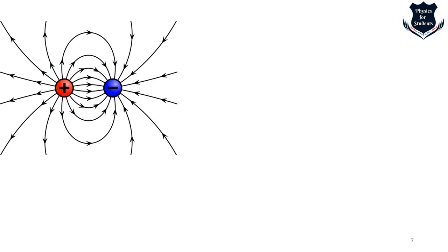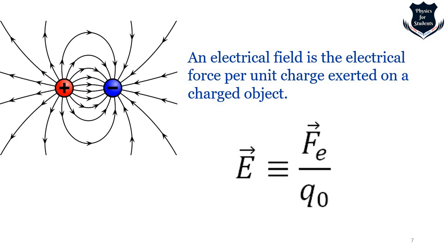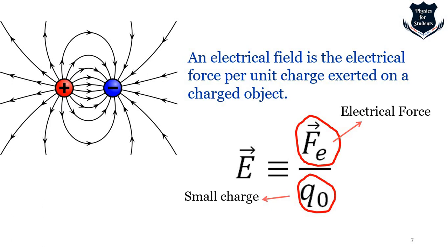A useful visualization shows a positive and negative charge. Most comprehensively, an electric field is the electrical force per unit charge exerted on a charged object. In the equation, one symbol denotes the electrical force and the other represents the small charge — we consider a small test charge to denote an experiment for a physical phenomenon.